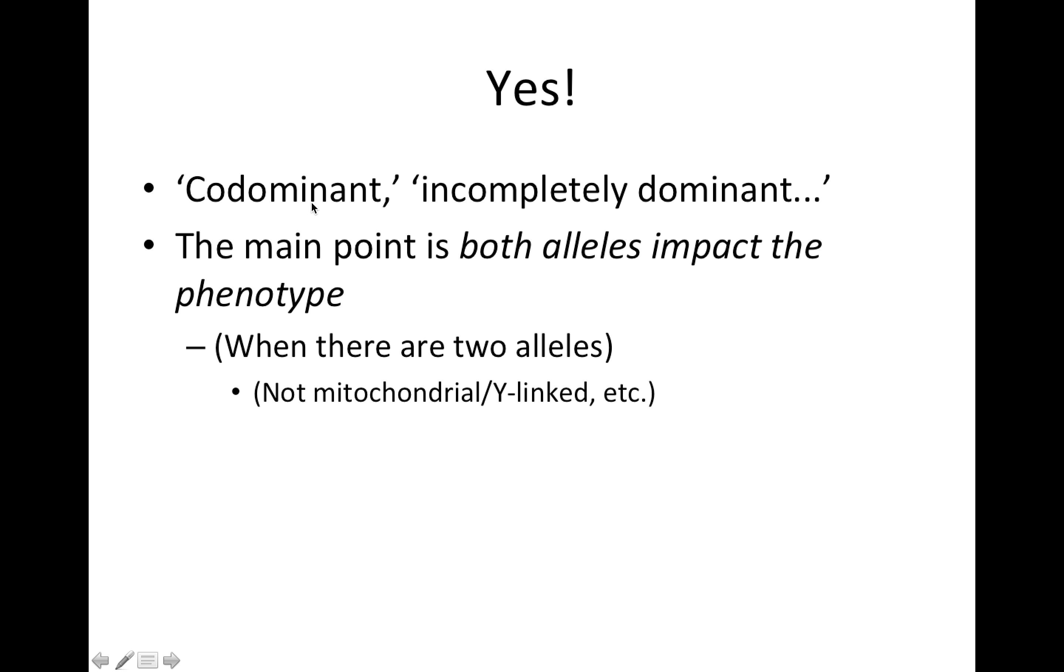If we're just talking in the autosomal case, we can call that codominant or incompletely dominant. But the main point is, I'm going to suggest we just call it non-dominance. The main point here is that both alleles will impact the phenotype, right? So we're talking about cases where there are two alleles, not mitochondria or Y-linked.